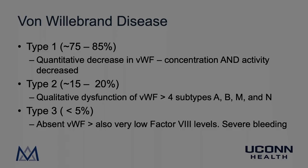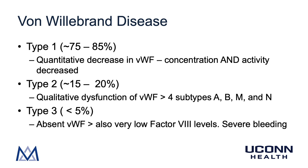Let's briefly review von Willebrand disease. It can be broken up into three types. Type I is the most common, affecting approximately 75 to 85 percent of people with von Willebrand disease, and involves a quantitative decrease in von Willebrand factor — resulting in decreased concentration and activity. Type II is the second most common, affecting approximately 15 to 20 percent of patients, and involves a qualitative dysfunction of von Willebrand factor. There are four subtypes: A, B, M, and N.